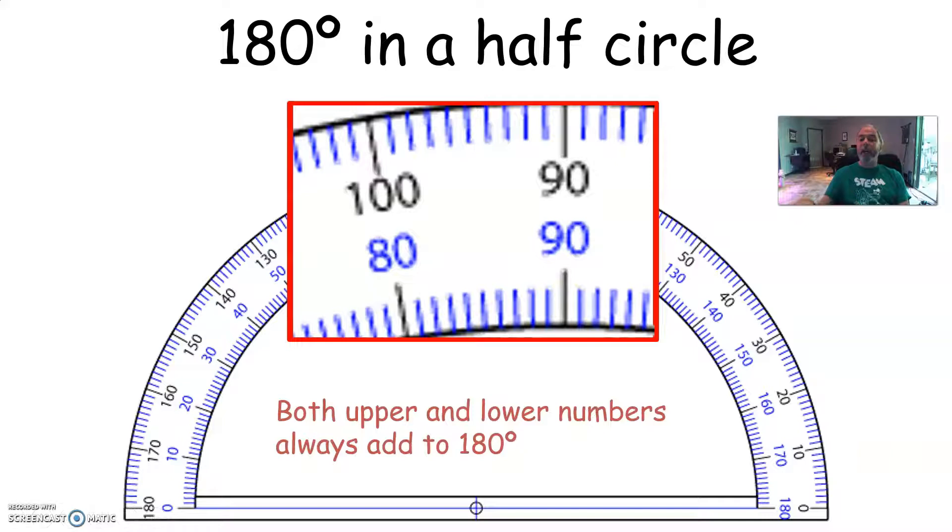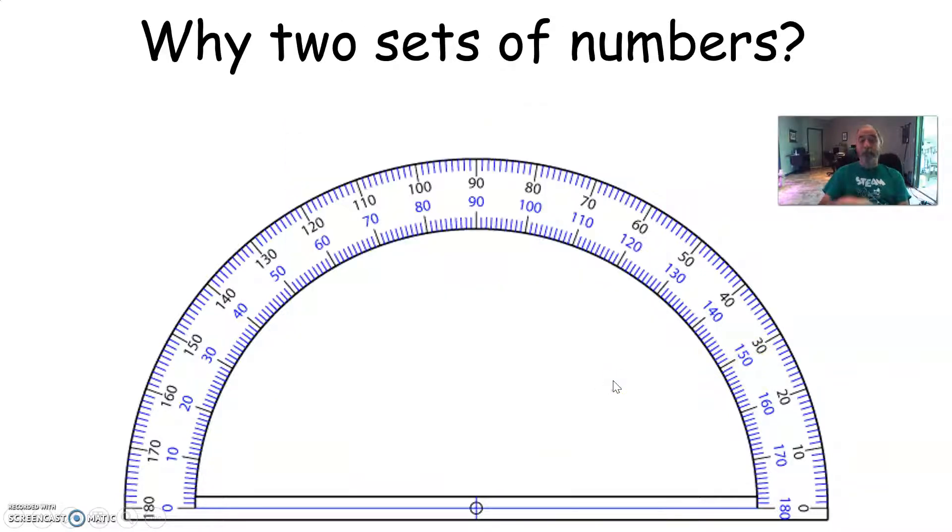Both the upper and the lower numbers will always add to 180 degrees. So here, I'm at 100 on the top and 80 on the bottom. That's 180 degrees. And this is 90 on the top and 90 on the bottom. 90 plus 90, you guessed it, 180 degrees. Over here, it's 30. And this is 150. Yeah, it's 180 degrees too. It's the same everywhere you go on the protractor.